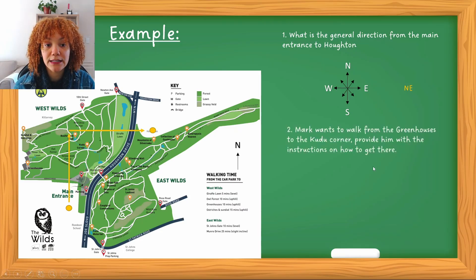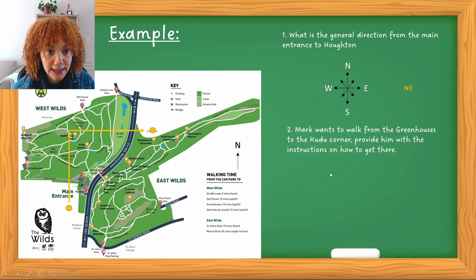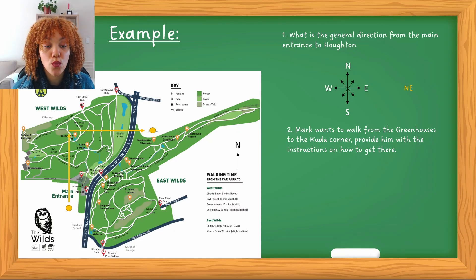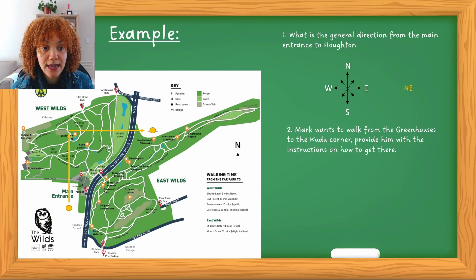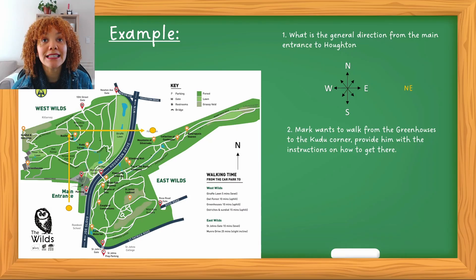The second question is a little bit more detailed. It says Mark wants to walk from the greenhouses to the kudu corner — provide instructions on how to get there. What's important here is that they now want you to provide clear instructions, so this is where you're going to actually give directions. The tip I can give you: always start your first sentence from where the person actually needs to leave.